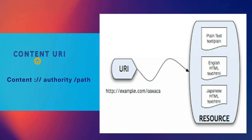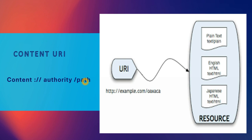Next we'll see a very important thing: content URI. Content URI is a URI — Unique Resource Identifier — that identifies data in the provider. It uses the symbolic name of the entire provider. The format is: content://authority/path, where authority is the name of the provider resource we are trying to access, and path is the table name we are pointing to. For example, if we want to access contacts, the authority should be 'contacts' and the path should be the specific table name within that resource.